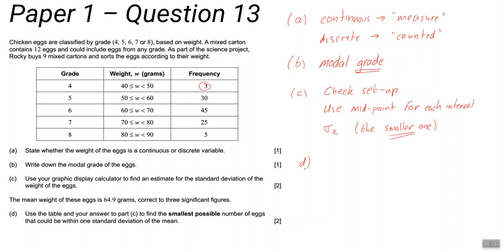Question D is quite a tricky one conceptually. You know that the mean is 64.9 grams. It says how many - the smallest number - could be within one standard deviation of the mean.